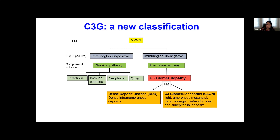Once C3G is diagnosed on immunofluorescence, the next step is doing electron microscopy to differentiate where the deposits are. If there are intramembranous deposits, then it's called dense deposit disease. And if there are more light, amorphous, mesangial, subendothelial, or subepithelial deposits, then it's called C3GN. So C3G is a term that has two subtypes: dense deposit disease and C3GN. C3G and C3GN are not exactly interchangeable terms — it depends on how much you know from the biopsy.